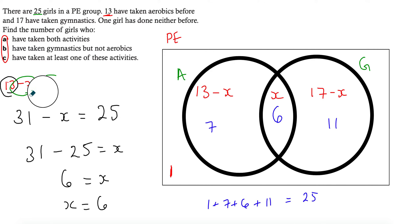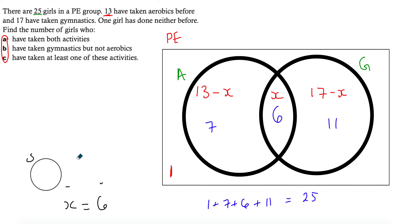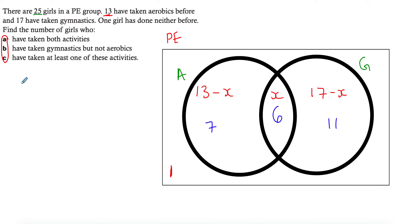Now I can answer the questions. Part A: how many take both activities? It's 6 — that's what we found. For the number of girls that take gymnastics but not aerobics, we're looking at the gymnastics-only region, not including the intersection — that's 11.